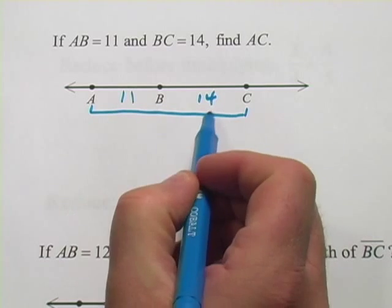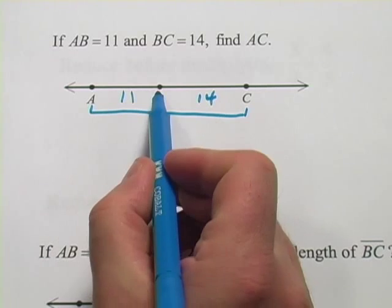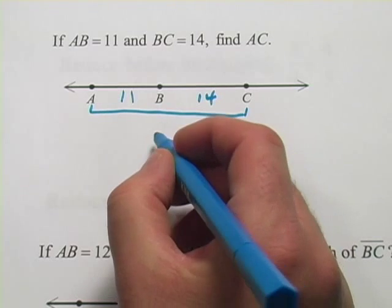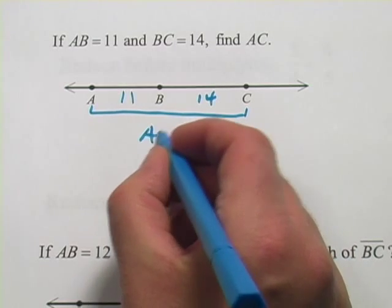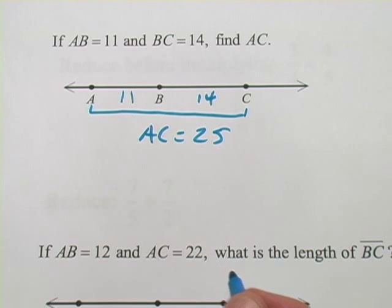And this might be obvious to you, but all you have to do is add these two together. The distance from A to B plus the distance from B to C is the whole distance from A to C. So 11 plus 14, and that's 25, so AC equals 25. And that's all there is to that one.